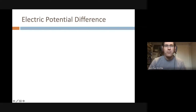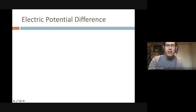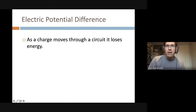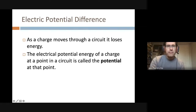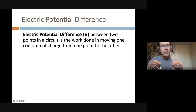We don't necessarily talk about the absolute electric potential at a point — that can be tricky to wrap your head around, but in practice it's pretty straightforward. As current flows through a circuit, the moving charge will lose energy as it interacts with elements like resistors, similar to how air resistance causes a moving object to lose energy. We're always looking at the potential difference.